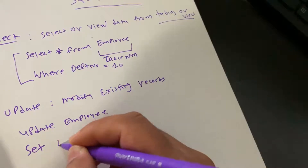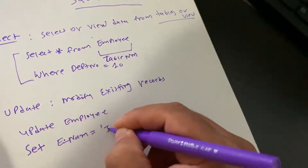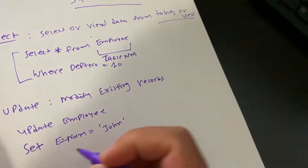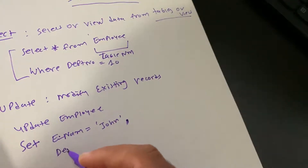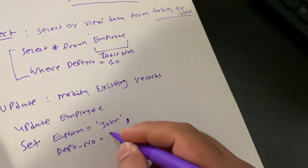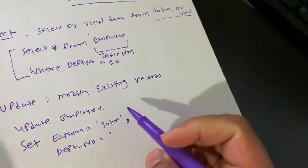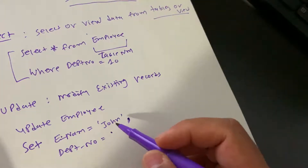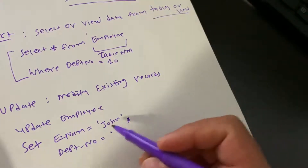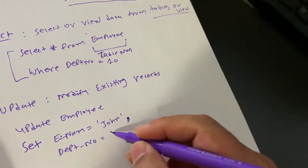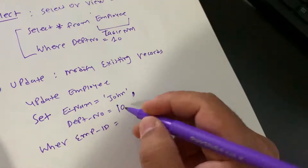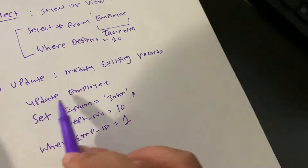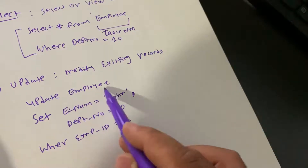For example: SET employee_name = 'John'. If you want to update one more field, use a comma — for example, department_number = 10. So the scenario is: an existing employee with ID 1 whose name was Smith has changed his name to John, and he also changed his department to 10. We use WHERE employee_id = 1 to specify which employee record to update.